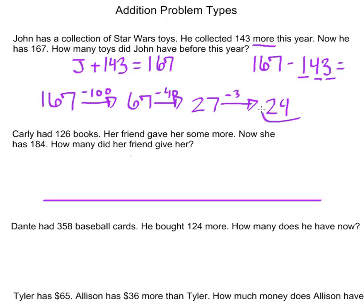So John started with 24 Star Wars toys before he added 143 this year, and now at the end he does have 167.